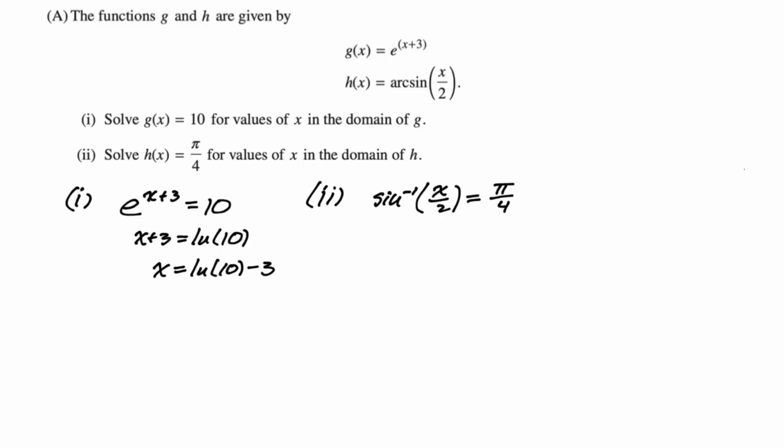I'm just going to take the sine of both sides to clear out that inverse sine. So we get x/2 is the sine of π/4. We know the sine of π/4 is √2/2. So x/2 is √2/2. And that means that x must be √2. And there you go. So that's our only answer.